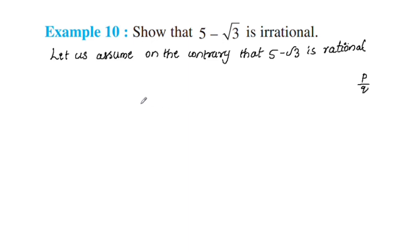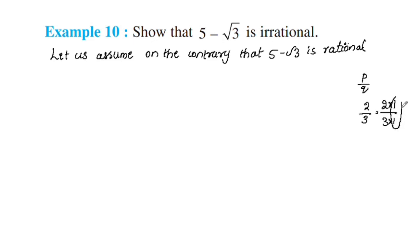Here, a and b are co-prime positive integers. Co-prime means a and b share no common factors other than 1. For example, 2 by 3 is rational and 2 and 3 are co-prime since their only common factor is 1.